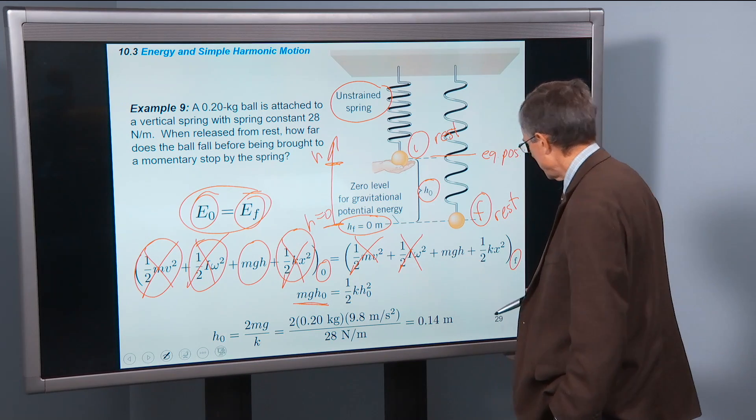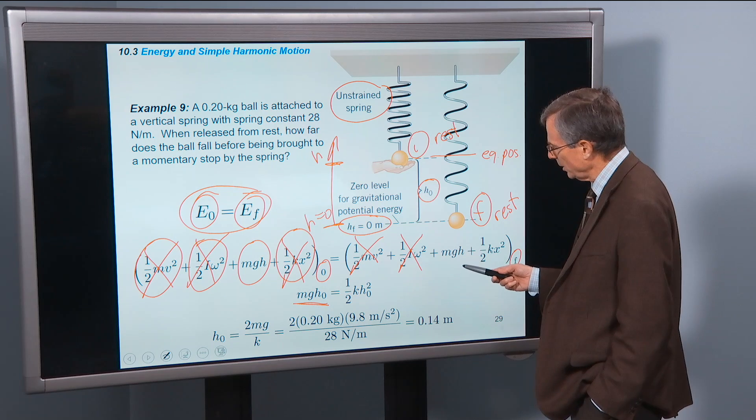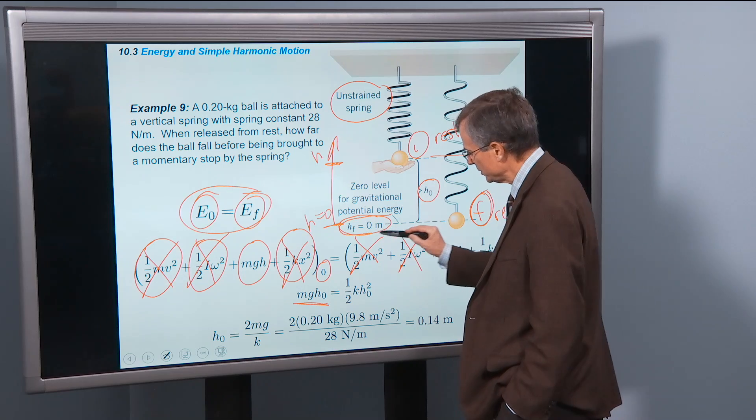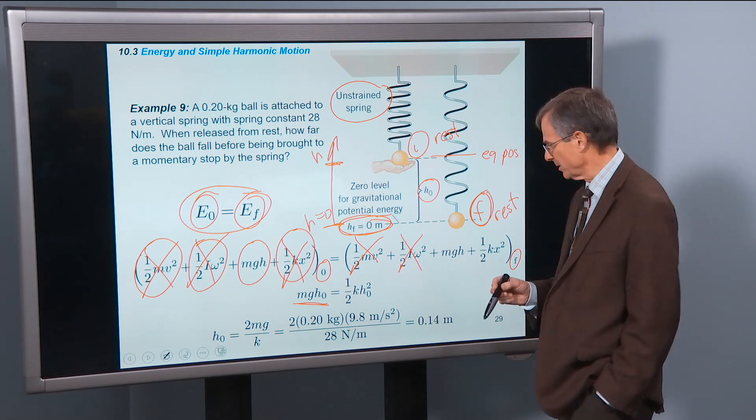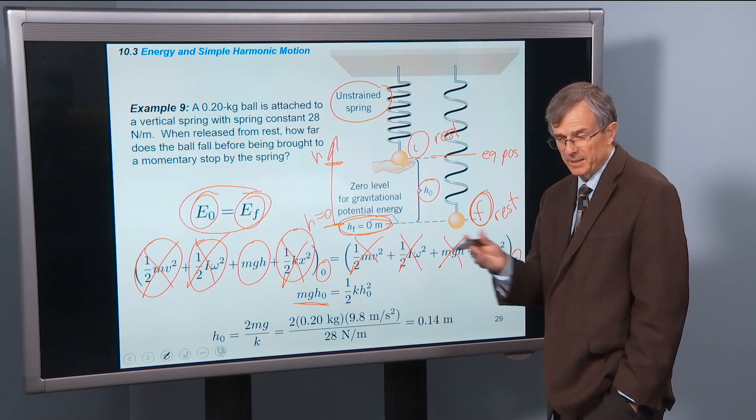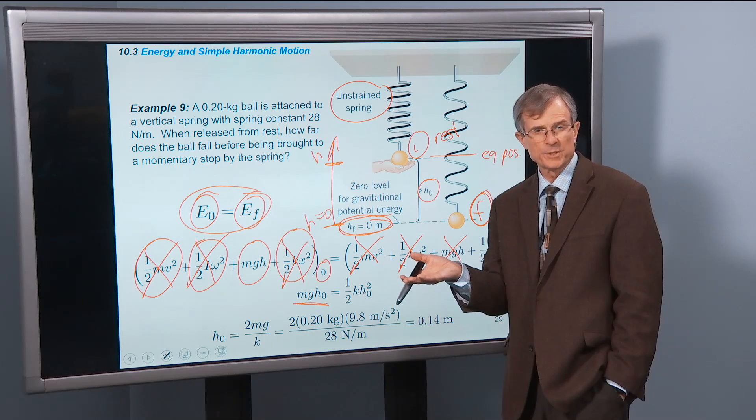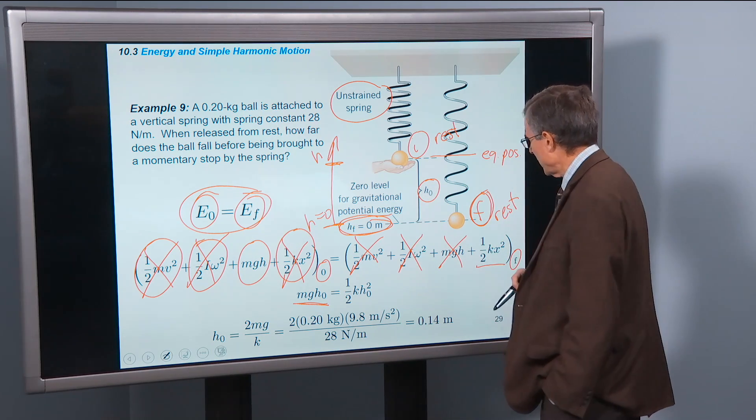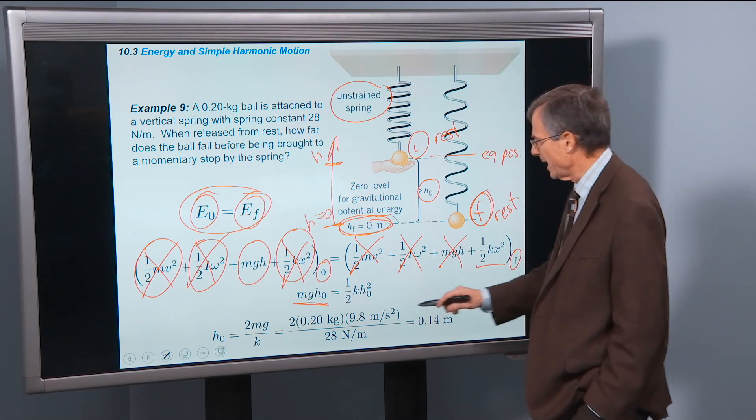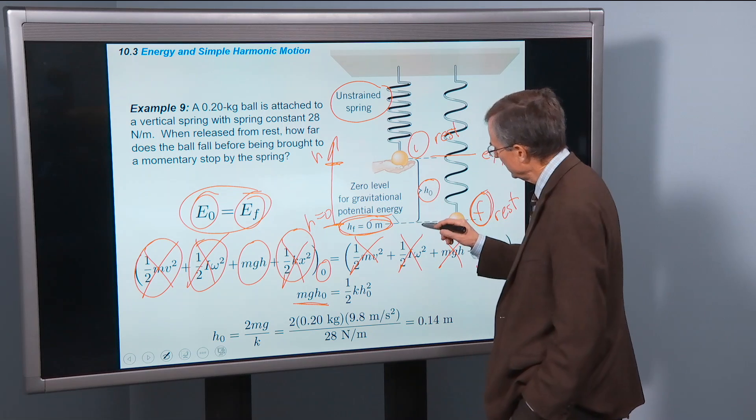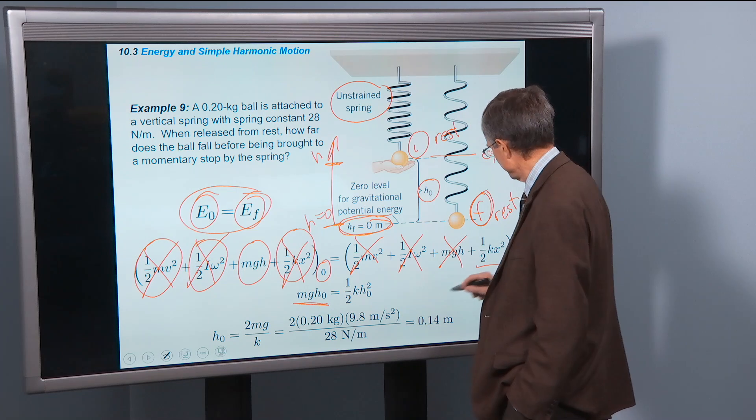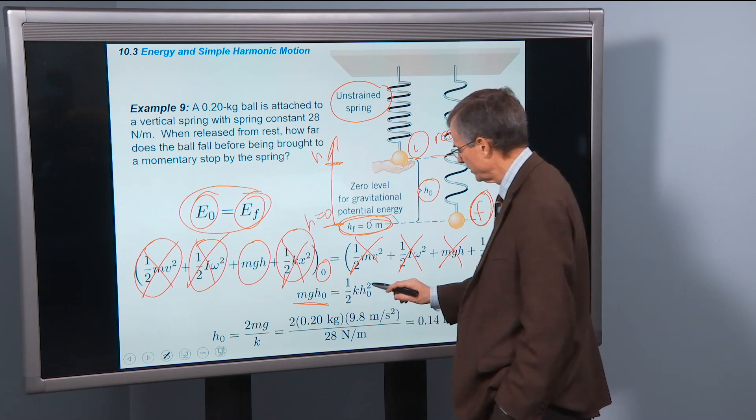On the right hand side, the final position, that's this position right here, is reached when h equals zero. So that's going to give us zero as well. Because we decided, we defined h equals zero to be that final position. But we do have some one-half kx squared here. That's one-half times k times the amount by which this guy is being stretched, squared.